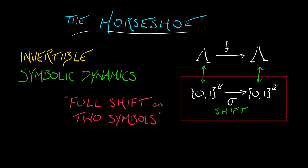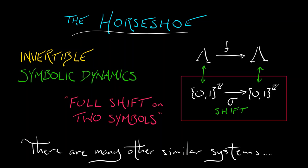That terminology is new to us. It's very specific to what is happening in the horseshoe. And the reason for that specialized terminology is that there are many other similar systems for doing symbolic dynamics in different maps.